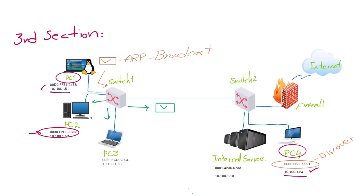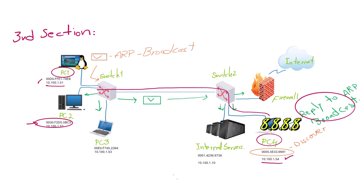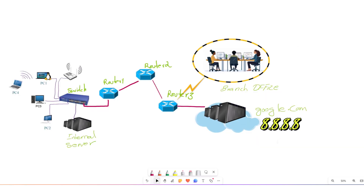When Switch 2 receives the broadcast from Switch 1, it does the same process and forwards the broadcast to all ports except the port it received it on. No one else will reply to the ARP broadcast message — only PC4 will reply with its MAC address, and thereafter communication between PC1 and PC4 will start.